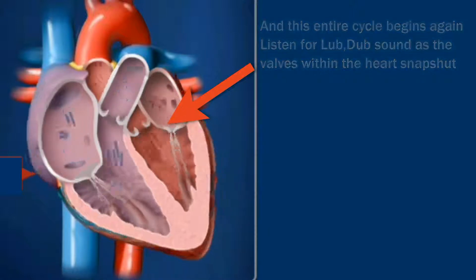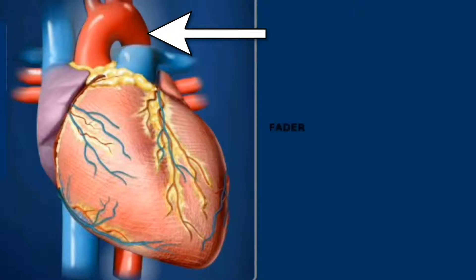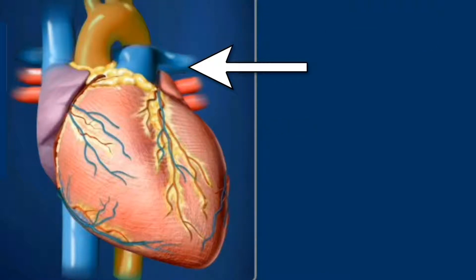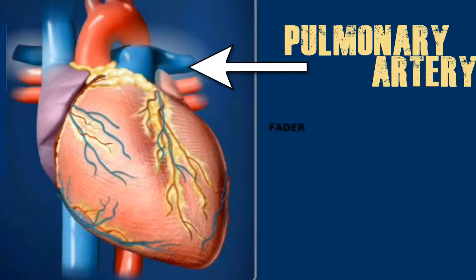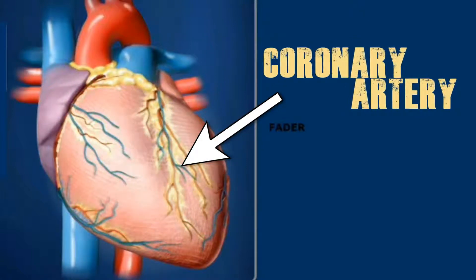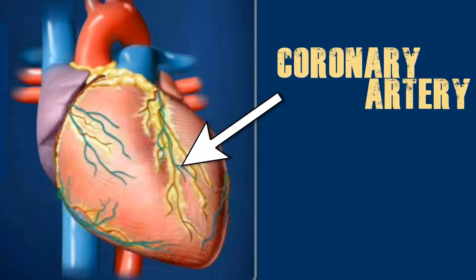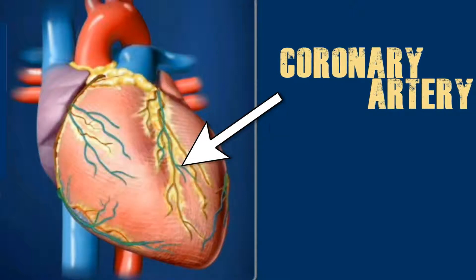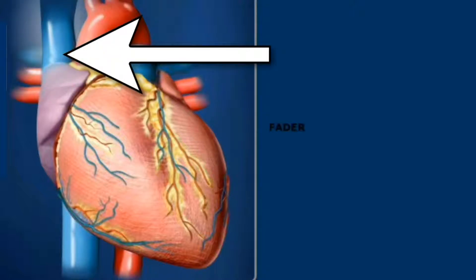Now let's discuss the exterior parts. Number one — aorta: the large artery that distributes oxygen-rich blood from the heart to the rest of the body. Number two — pulmonary artery: carries blood lacking oxygen from the heart's right ventricle to the lungs. Number three — coronary arteries: vessels that provide the heart muscle with the oxygen-rich blood it needs. Two main coronary arteries branch off from the aorta and each branches further to supply oxygenated blood to different parts of the heart. We will learn about coronary artery disease in our next video.